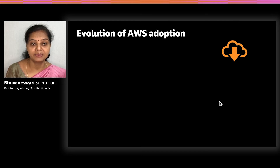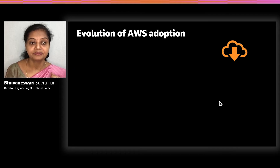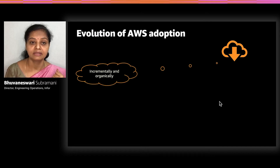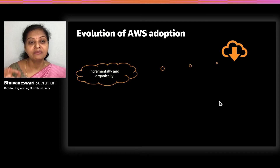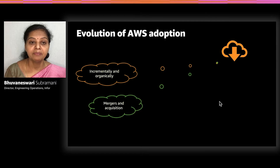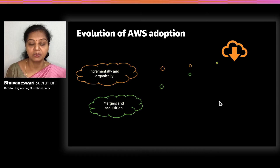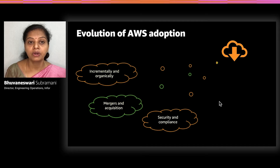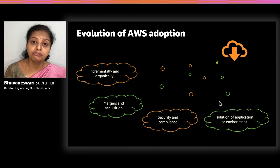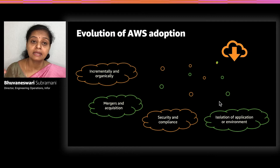Evolution of AWS adoption. In the journey to cloud, companies would have felt the need for more than one AWS account as part of their growth. Some companies move to AWS incrementally or organically, with individual divisions and teams making a move to cloud computing on a decentralized basis. Some companies start through mergers and acquisitions, taking responsibility of existing AWS accounts. And some routinely go for additional AWS accounts as a security best practice, or to have a clear isolation barrier between applications or a dedicated account per environment.